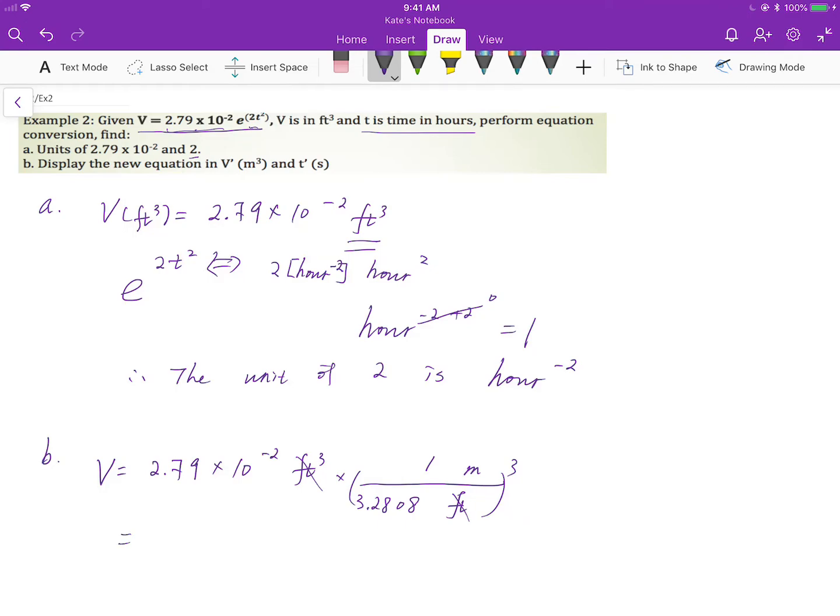Let's look at the first part first. Then you will get 7.90 times 10 to the negative 4 cubic meters.